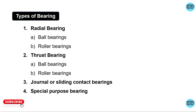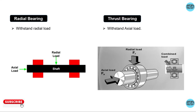Types of bearings are: radial bearing, thrust bearing, plain and sliding contact bearing, and some special purpose bearings. There are two types of load acting on the shaft: axial load and radial load. Axial load acts along the axis of the shaft, and radial load acts perpendicular to the axis of the shaft.